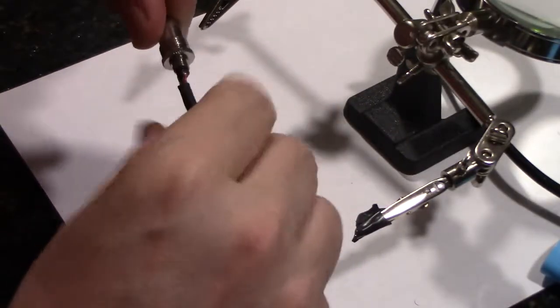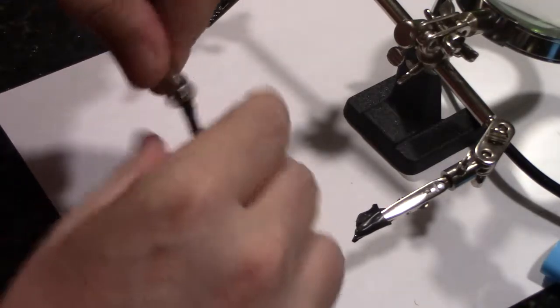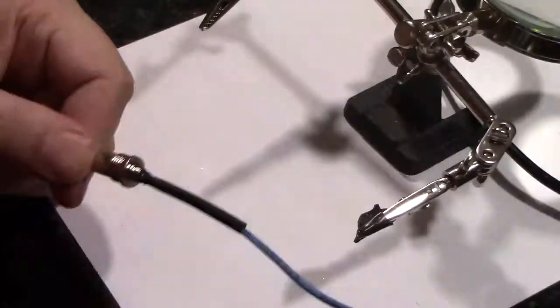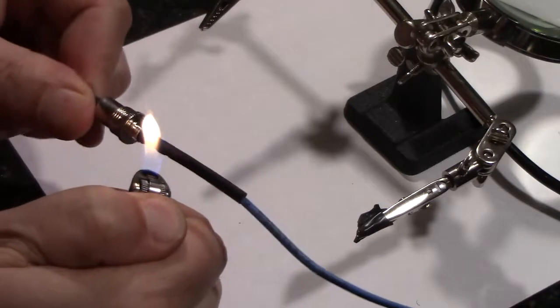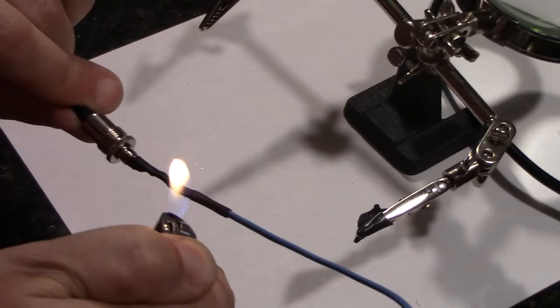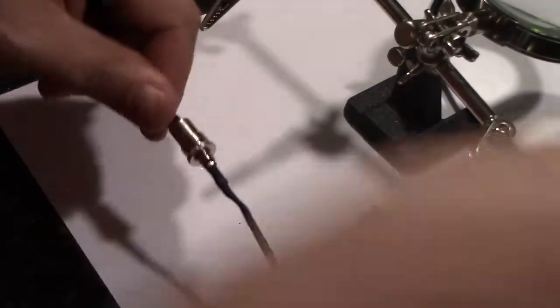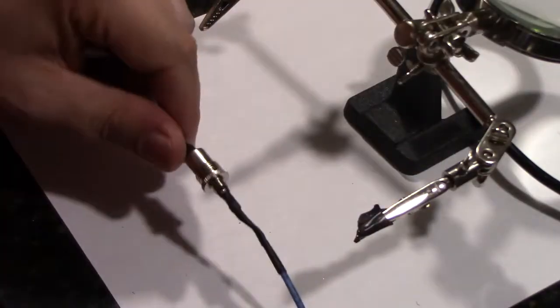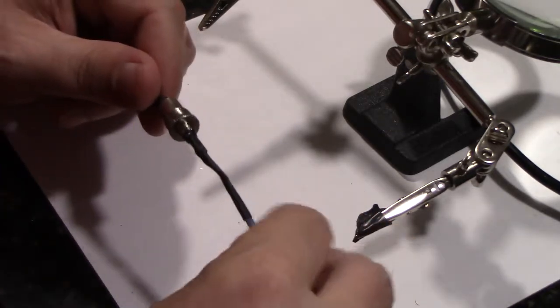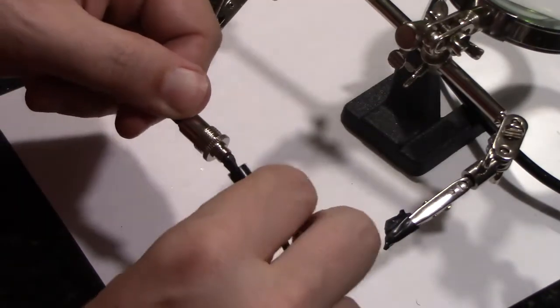One thing you have to be careful of: if you bring the heat shrink tubing up too quickly while these components are still hot, then it will melt and shrink while you're trying to get it over top of what you're trying to protect. I've also learned the hard way that you shouldn't overheat your heat shrink tubing because it will expand again if you fire it too long.